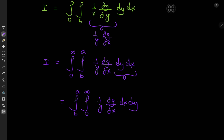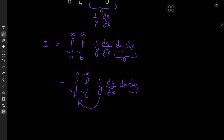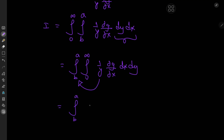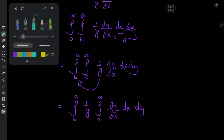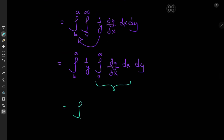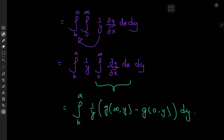Now 1/y is independent of x, so we take it outside the x-integration operator and write this as the integral from b to a of (1/y) times the integral from 0 to infinity of (∂g/∂x) dx dy. We've turned it inside out so that we now have the derivative of g with respect to x with integration also with respect to x. Applying the fundamental theorem of calculus — this time in the missionary sense — gives us (1/y) times [g(∞,y) minus g(0,y)], integrated with respect to y.